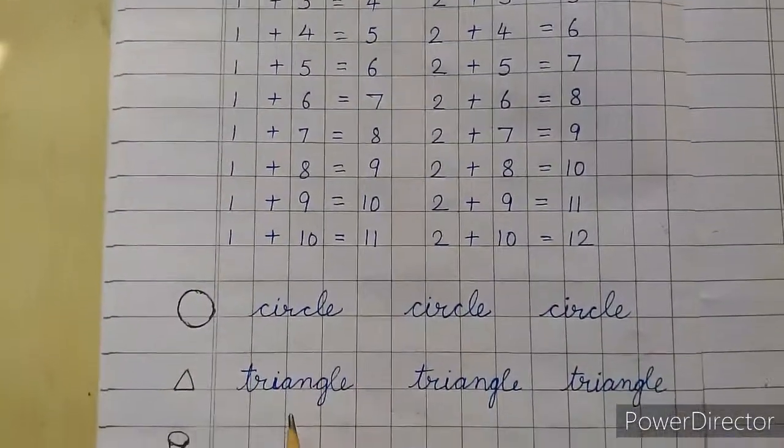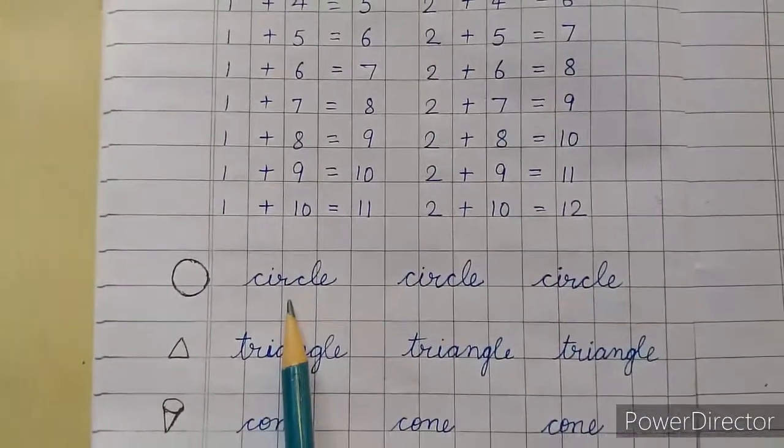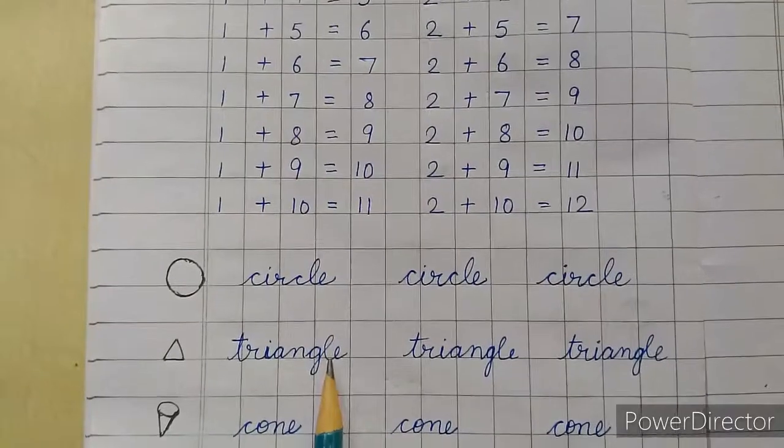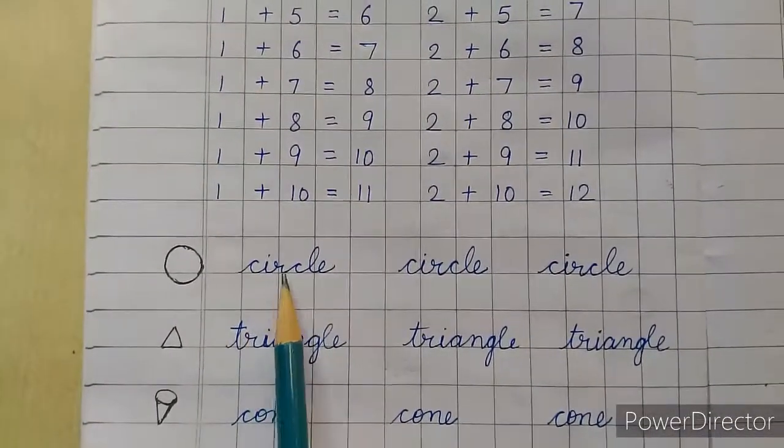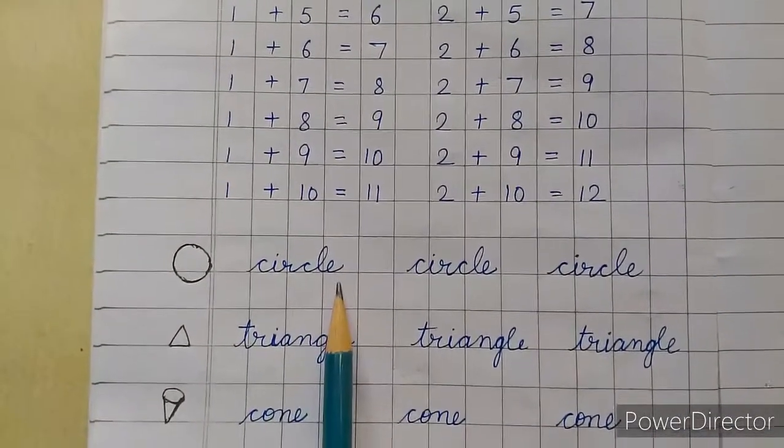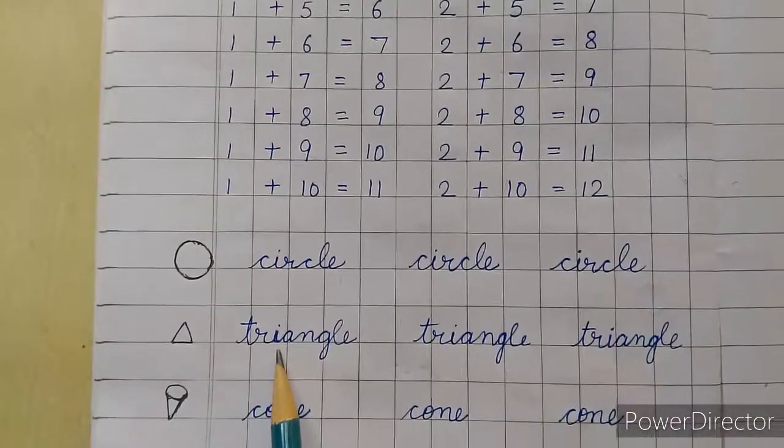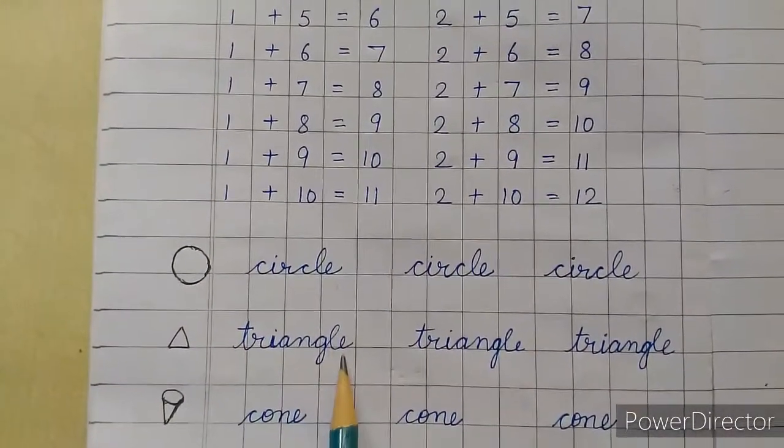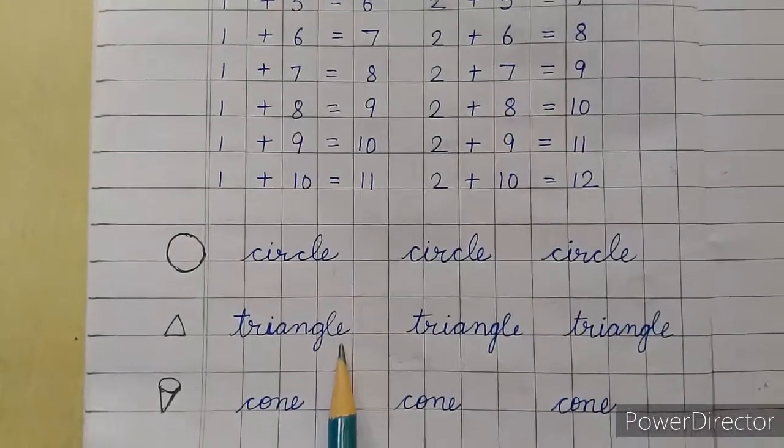Now on the downside of your page you will write the spelling of circle, triangle and cone. C-I-R-C-L-E circle, T-R-I-A-N-G-L-E triangle. This we have studied in last class.